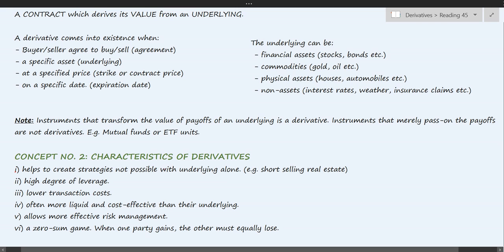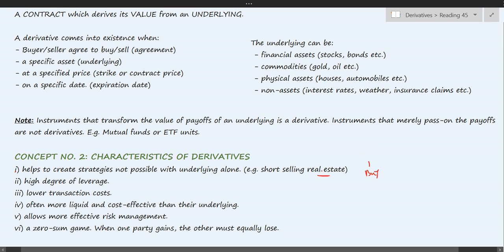Coming to concept number two: characteristics of derivatives. Number one — it helps create strategies which are not possible with the underlying alone. For instance, short selling: although you can short sell stocks or bonds, you cannot short sell real estate or commodities. But this is now possible with derivatives. Short selling means you first sell and then buy, which is not possible with real estate — you cannot sell a house you do not possess — but derivatives make this possible.